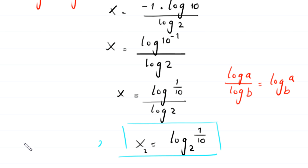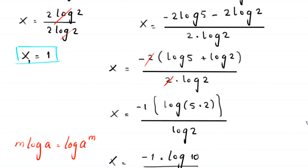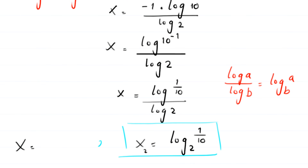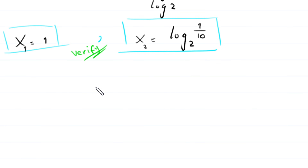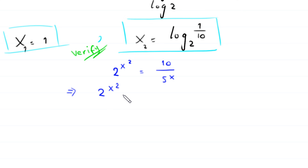So we have two solutions: x equals 1 and x equals log base 2 of 1 over 10. Now let's verify whether these solutions are valid. The original equation is 2 to the power x squared equals 10 divided by 5 to the power x. Multiplying both sides by 5 to the power x gives 2 to the power x squared times 5 to the power x equals 10.